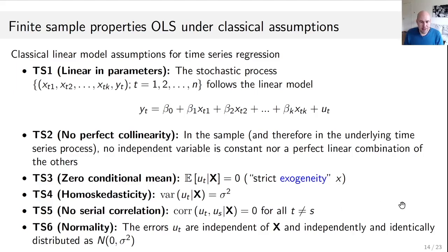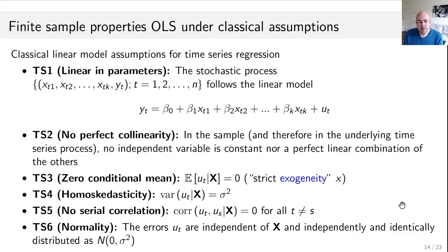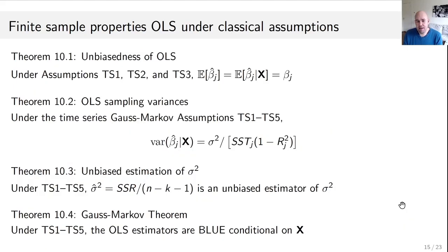The last assumption is normality: the u_t's are independent of all the x's and independently and identically distributed as Normal with mean zero and variance sigma-squared. This is used to get exact distributions of estimators, as before.